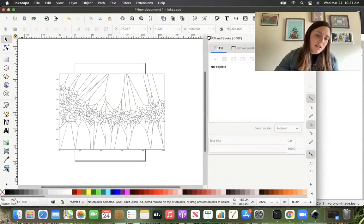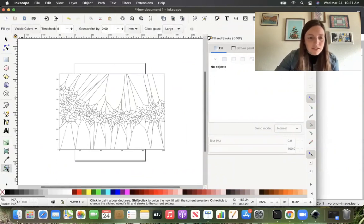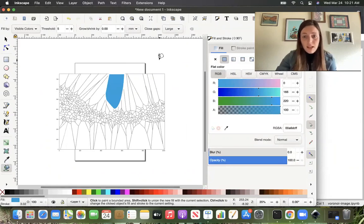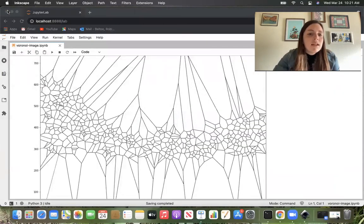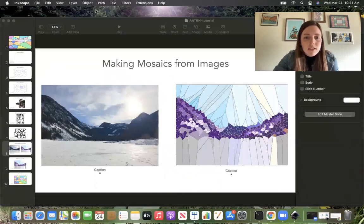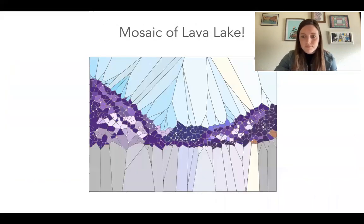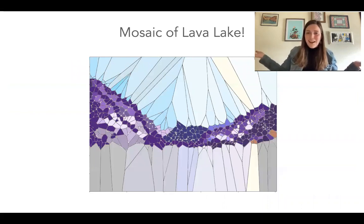And now I'm going to color the cells. And the way I'm going to do this is with the paint can feature. So I'm going to pick it out and color it in. And I can continue this process for all the cells in this Voronoi diagram. I've already done this process, so you don't have to watch me color all 500 cells. And this was the final product. Voila. We have a mosaic of Lava Lake.